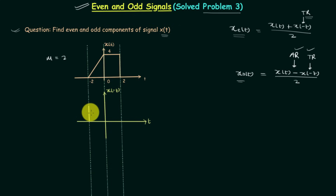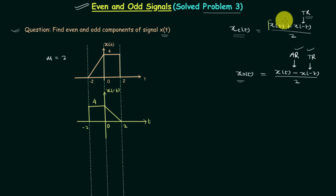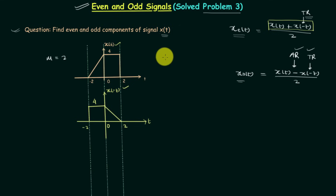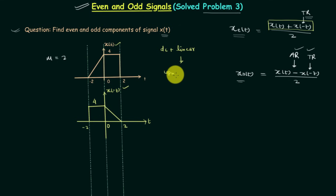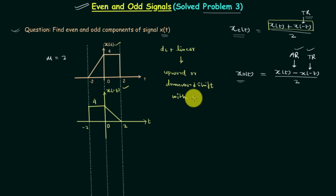By flipping the signal about the Y axis we obtain X(-t). There is one important point regarding this addition: whenever you perform the addition of a DC value plus a linear signal having some slope, the resultant will have an upward or downward shift with the same slope. The slope remains the same and the shift depends on the DC value.